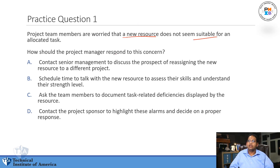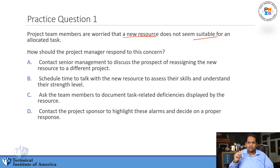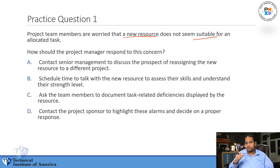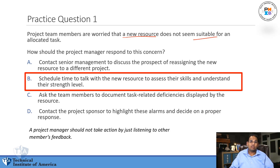A: Contact senior management to discuss the prospect of reassigning the new resource to a different project. B: Schedule time to talk with the new resource to assess their skills and understand their strength level. C: Ask the team members to document task-related deficiencies displayed by the resource. D: Contact the project sponsor to highlight these alarms and decide on a proper response. The answer is B.